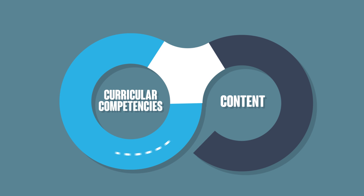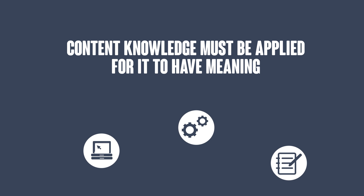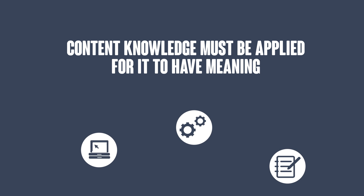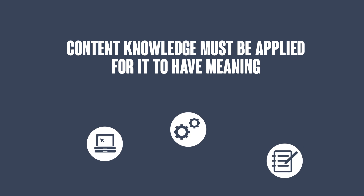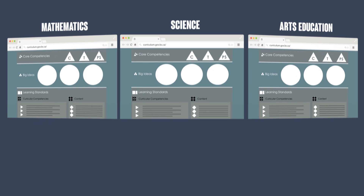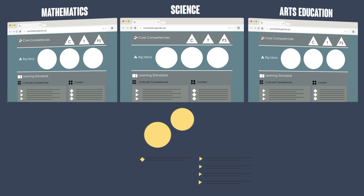Content and curricular competencies are connected and require teachers to plan with both in mind. Simply possessing content knowledge without applying it is not very meaningful. Curricular competencies allow students to engage and interact with the content. The model allows for different ways of combining content and curricular competencies, giving teachers a great deal of flexibility in how they create learning activities, experiences, units of studies and specific lessons.